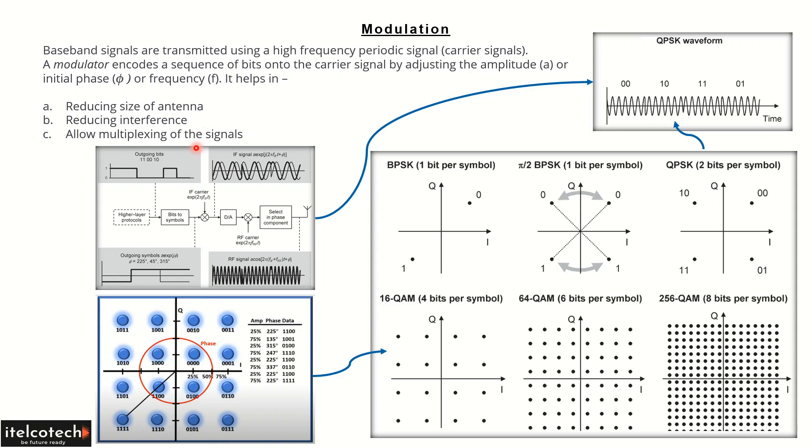And it will also help multiplex different signals to pass through. One example here, we see that once the bits or the information when passed on, it changes its phase every time in terms of a QPSK case, for example.